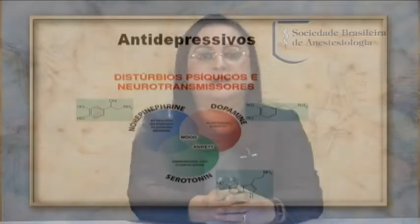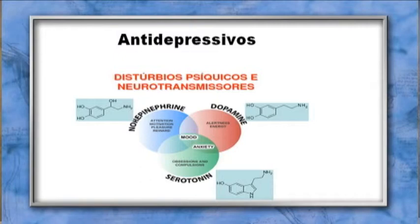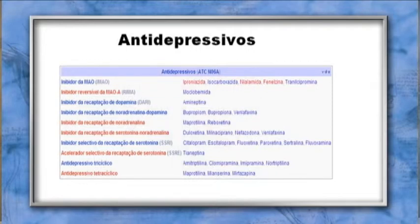Os antidepressivos também são drogas que agem no sistema nervoso central. O humor e equilíbrio estão relacionados com três neurotransmissores: norepinefrina, dopamina e serotonina. Os antidepressivos agem sobre esses três: inibidores da MAO (iproniazida, tranilcipromina, inibidor MAO-A: moclobemida); inibidores da recaptação da dopamina; inibidores da recaptação da noradrenalina e dopamina (bupropiona); inibidores da recaptação da noradrenalina; inibidores da captação de serotonina e noradrenalina; inibidores da recaptação da serotonina (ISRSs). Os antidepressivos tricíclicos clássicos incluem imipramina e clomipramina, e os tetracíclicos são também antidepressivos clássicos.